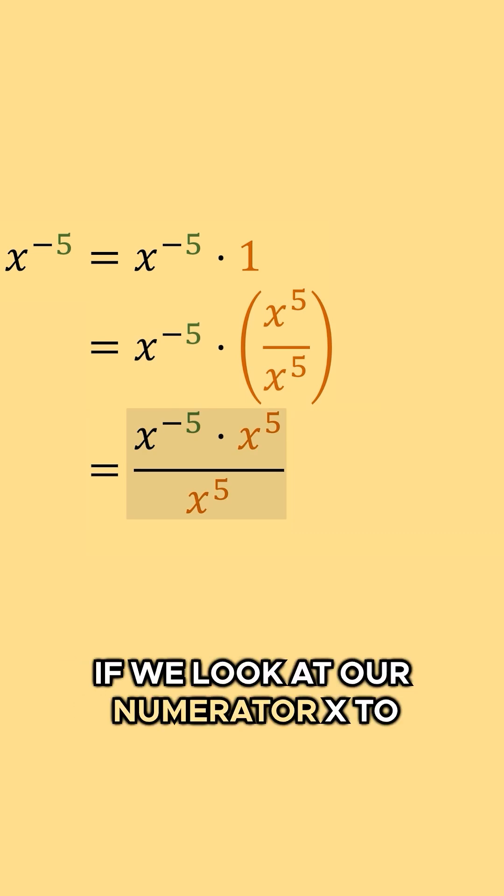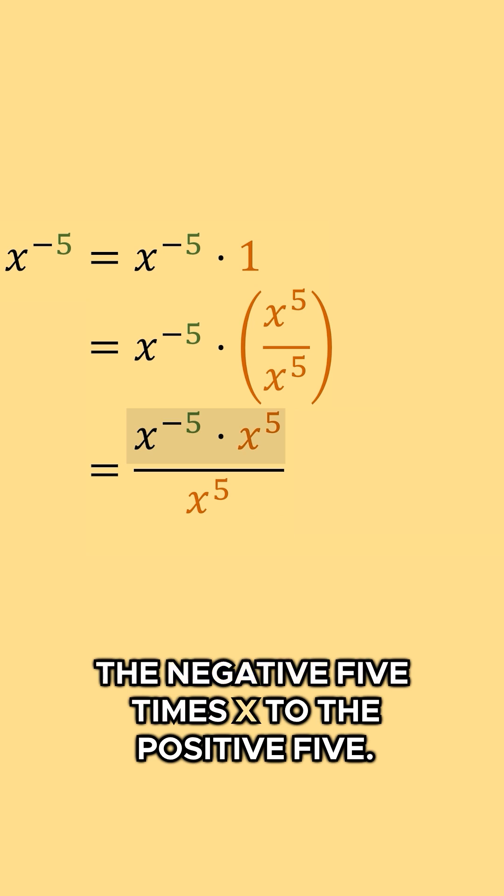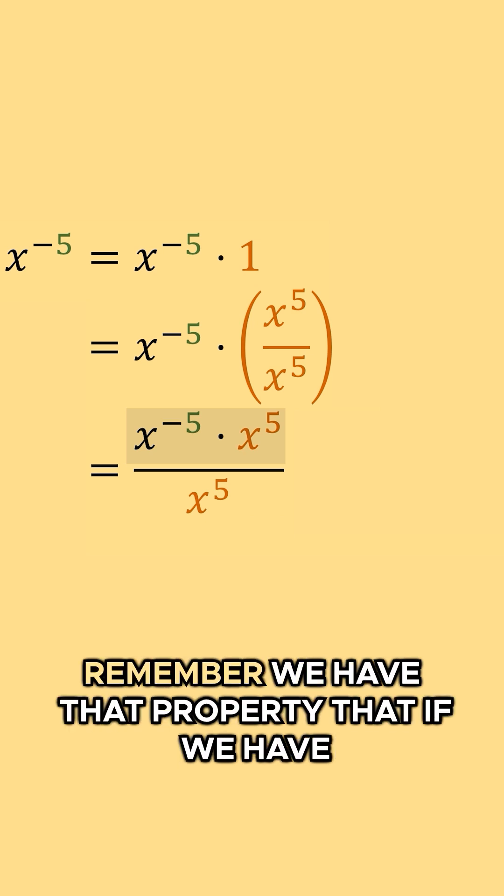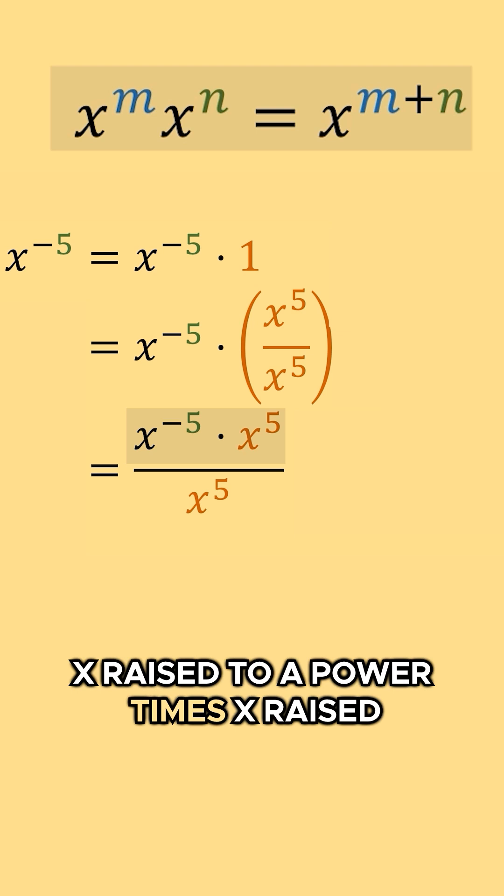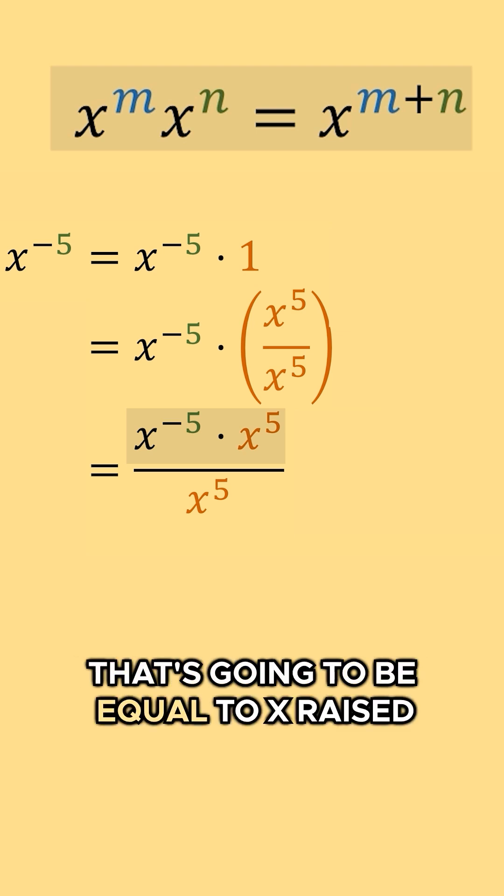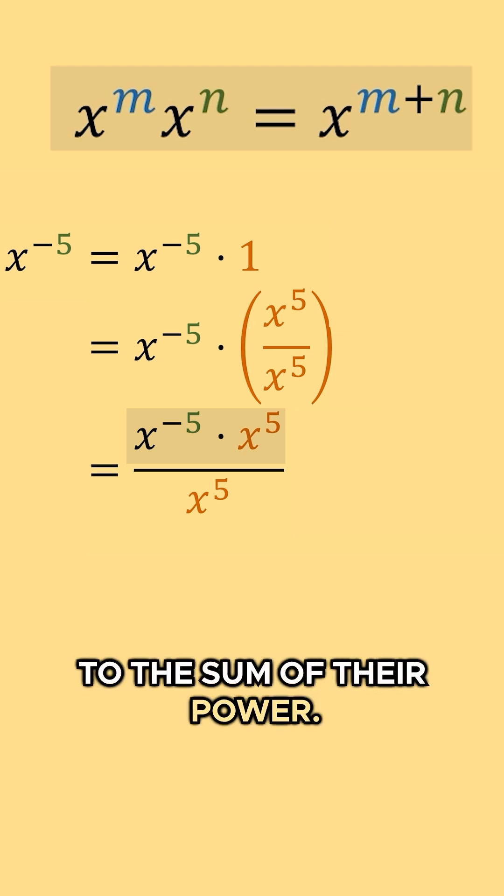Well, if we look at our numerator, x to the negative five times x to the positive five, remember we have that property that if we have x raised to a power times x raised to another power, that's going to be equal to x raised to the sum of their power.